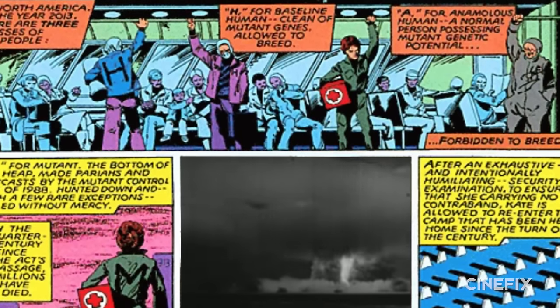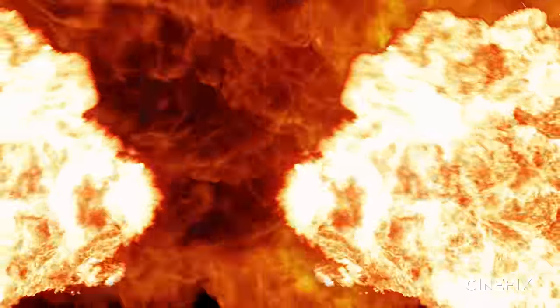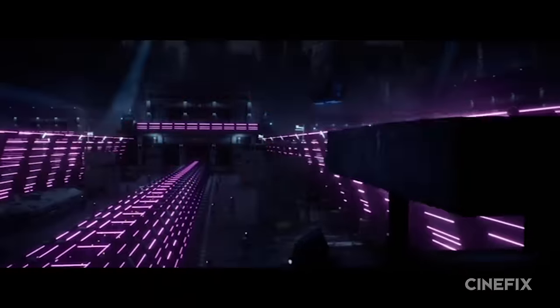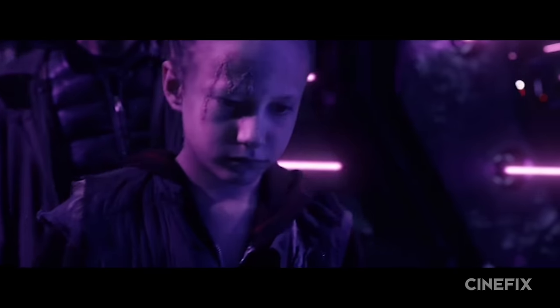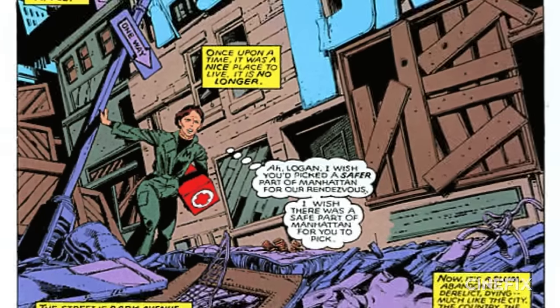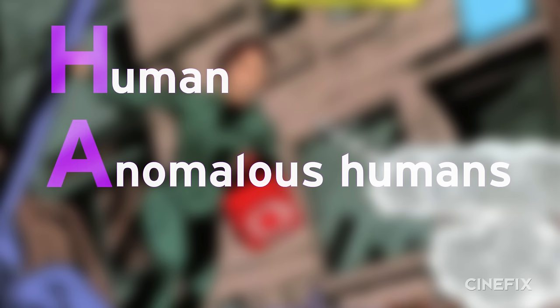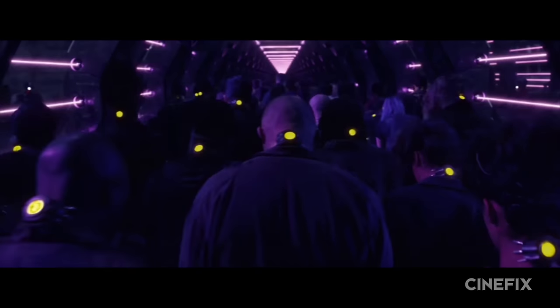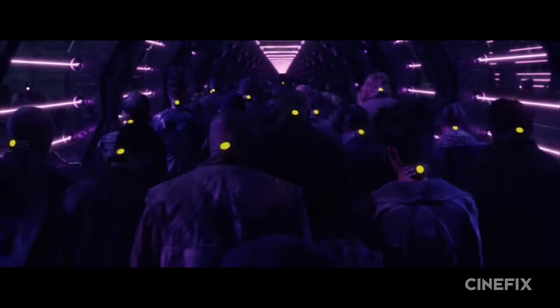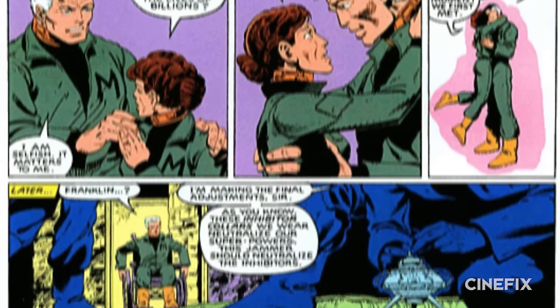In the comics, the rest of the world threatens to nuke North America and anywhere else in order to stop the Sentinels' plans, leading to nuclear Armageddon and the end of everything. The film provides a hint of the designations that Sentinels give people when we see the M's seared into the faces of mutant prisoners. In the comics, the letters are sewn into their prison uniforms with three designations: H for human, A for anomalous humans who could produce mutant children, and M for mutant.